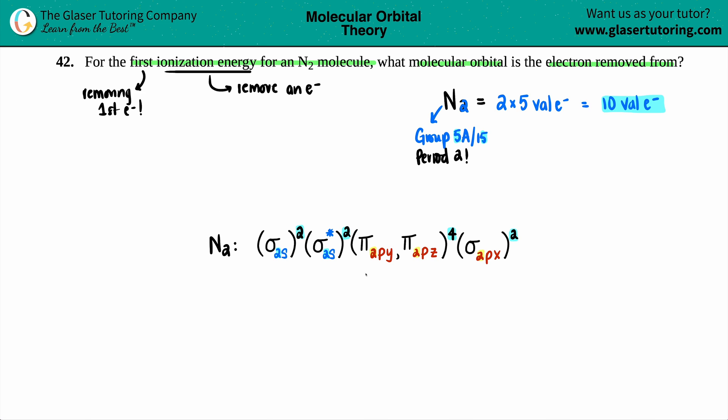But now we want to lose one electron, because we're removing an electron, it's ionization energy. We want to know what molecular orbital is that electron going to be removed from. And the key here is that when you're starting to lose electrons, you go the opposite way. So when you're placing them in, you go from lowest to highest energy. But when you're getting rid of them, you start chipping away from your highest energy down to your lowest energy.